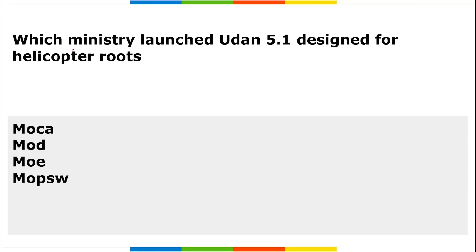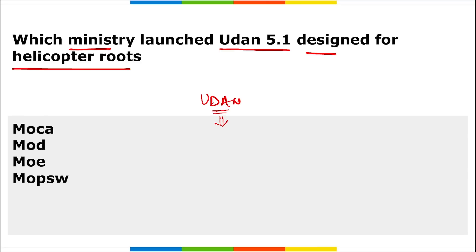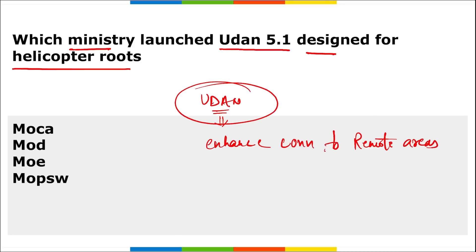First question: which ministry launched Udaan 5.1, designed for helicopter routes? The Udaan scheme — Ude Desh ka Aam Nagrik — was earlier launched to enhance connectivity to remote areas of the country.